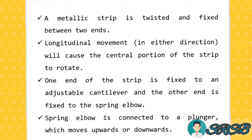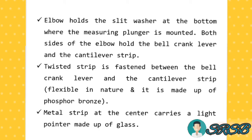The spring elbow is connected to a plunger which moves up and down. The elbow holds the split washer at the bottom where the measuring plunger is mounted. Both sides of the elbow hold the bell crank lever and the cantilever strip.